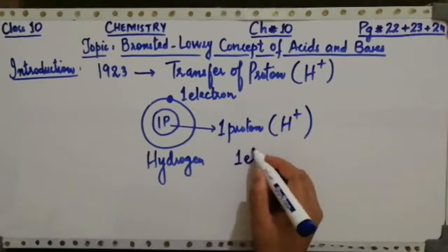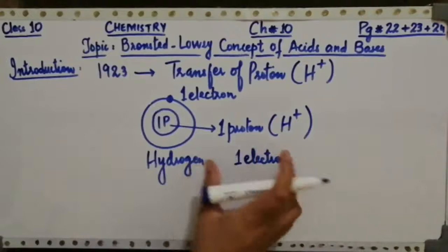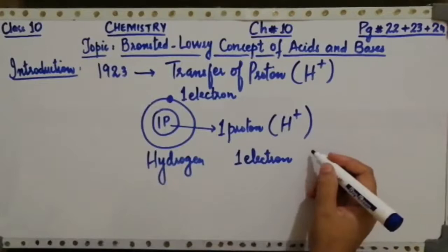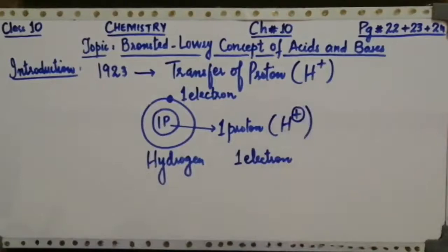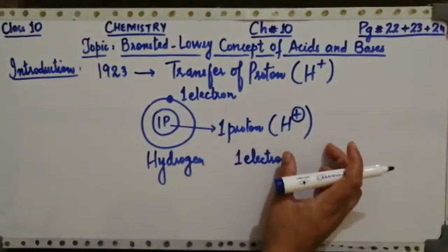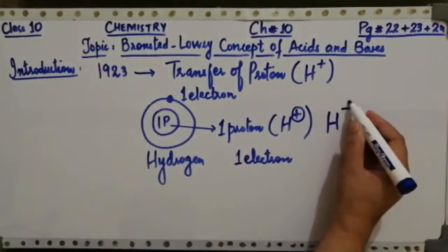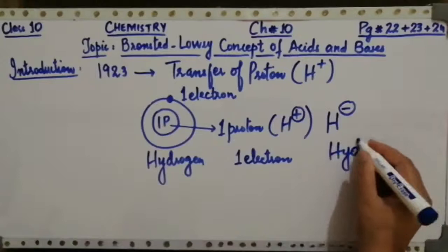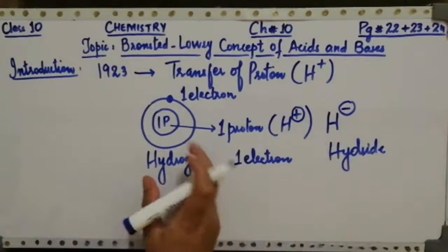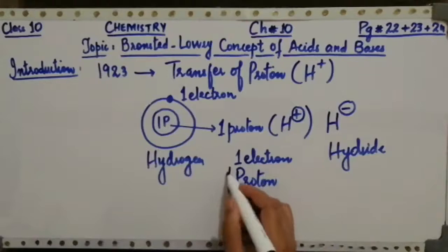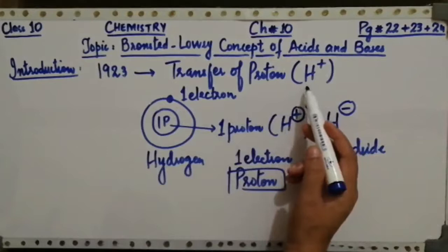Hydrogen ion always tries to share its one electron with other atoms. By donating its one electron to another atom, it becomes an atom having only one proton in its nucleus. Those atoms which donate their electrons to other atoms basically have a positive charge on them. In this form, when hydrogen donates its electron, it carries a positive charge, which indicates it is also called a proton. So the transfer of proton means hydrogen ion, or simply H+.